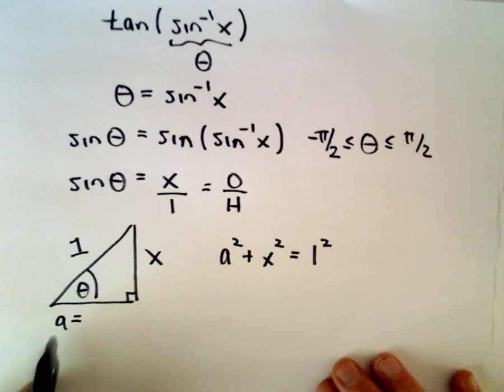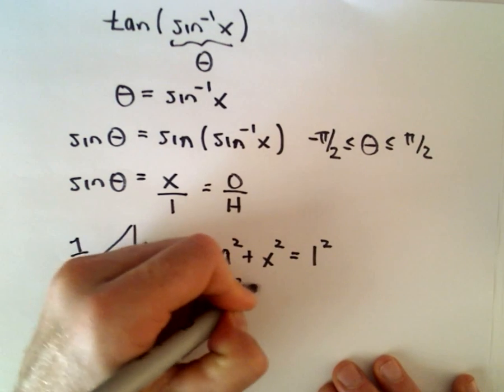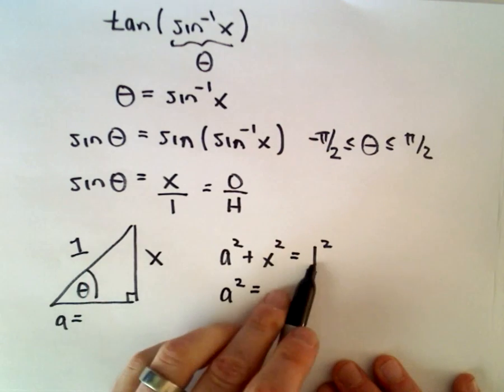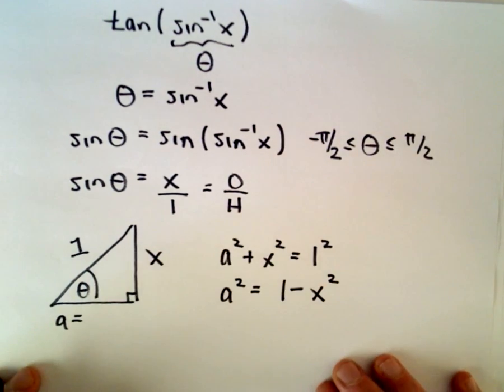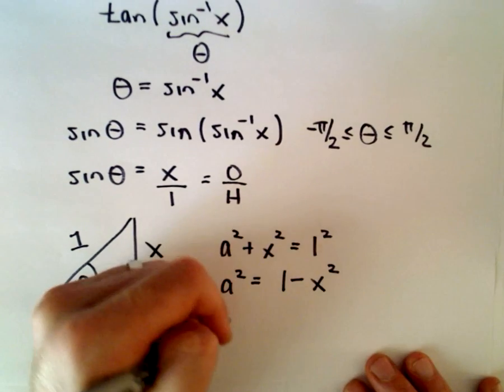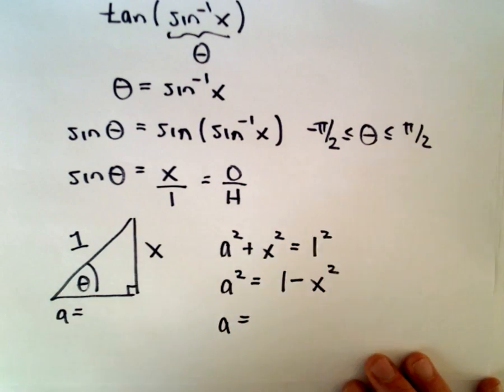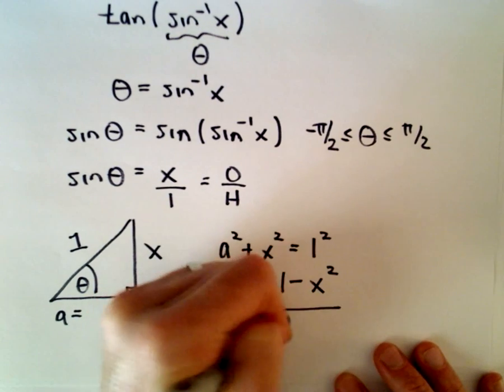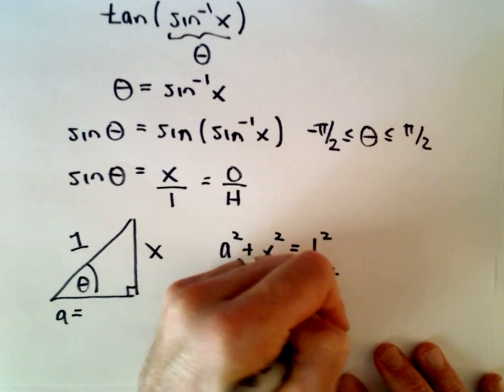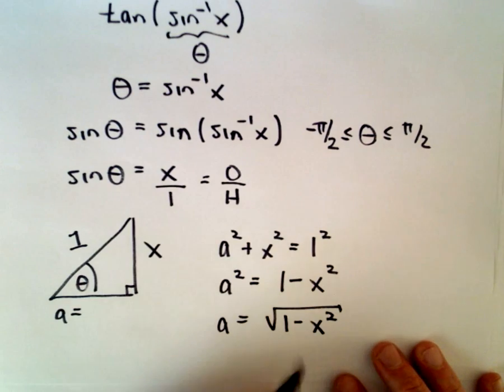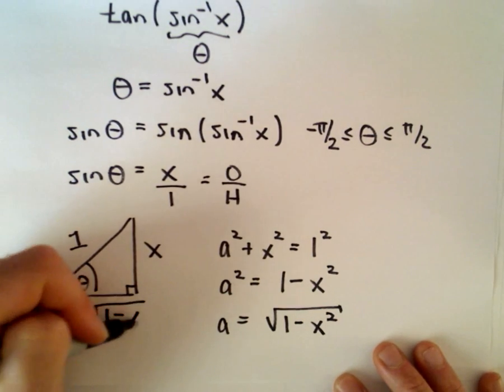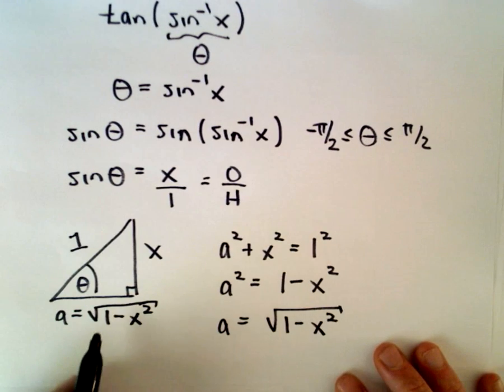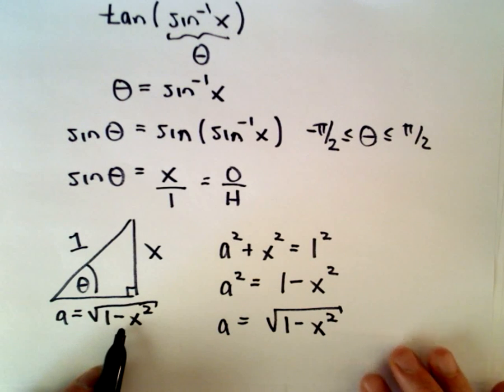We're trying to solve for the adjacent side. I'm going to subtract - well, 1 squared is just 1. We'll subtract the x squared. Now I'm going to take the square root of both sides. So again, normally you'd have positive and negative when you take the square root. I'm just going to label it as positive. So the adjacent side is going to be the square root of 1 minus x squared.